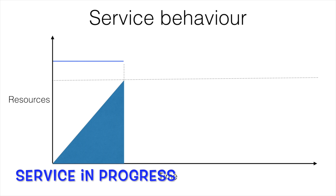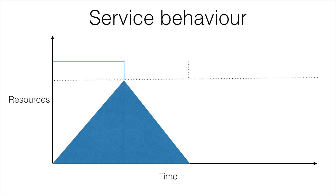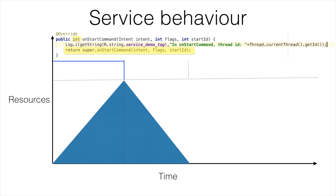In this particular graph, you can see that there will arise a situation where the Android operating system has to intervene and it needs to kill the service. At a later point in time, as the resources become available, there will be a time where the Android operating system will have enough resources to host the service that had been killed earlier. Now the question is, what should happen to the service that has been killed?